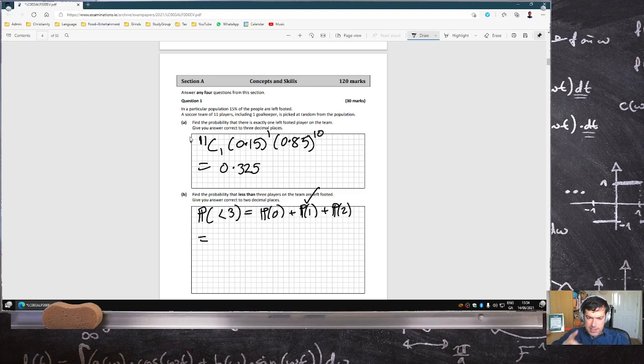So all I got to do is add zero and two using the same formula to this answer. So the only difference with zero is 11C0, 0.15^0, 0.85^11. And then two would be 11C2, 0.15 squared, 0.85^9. So in total, that would be 0.78.